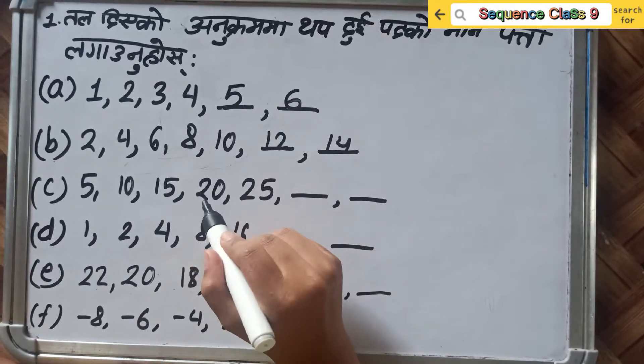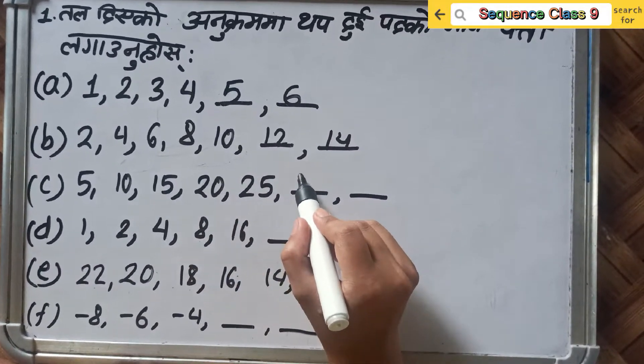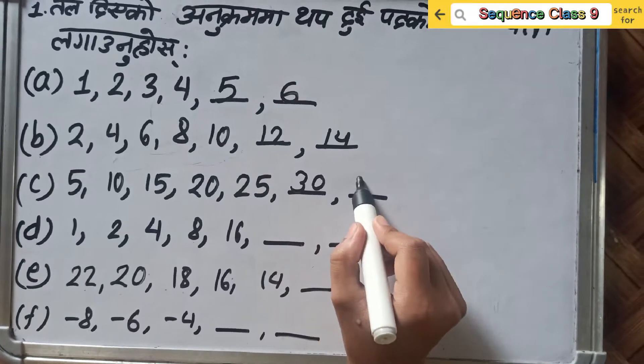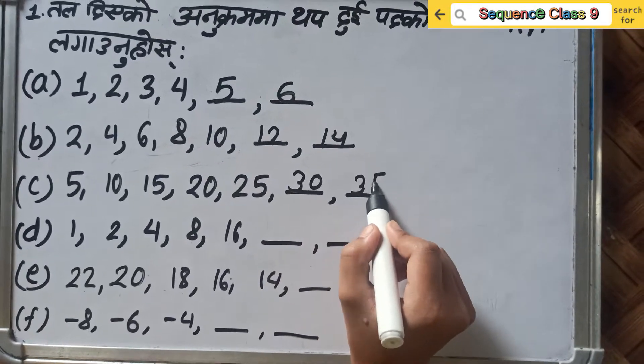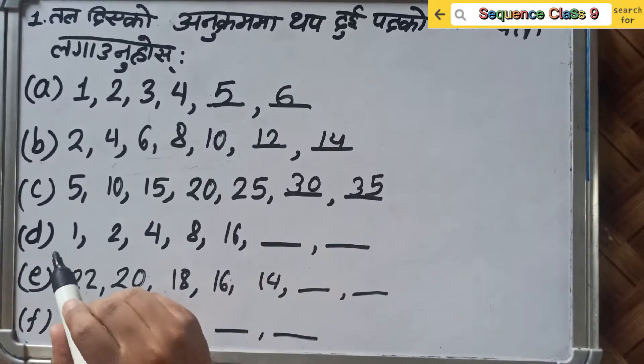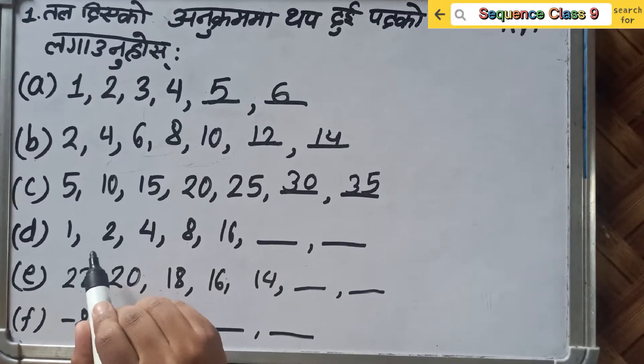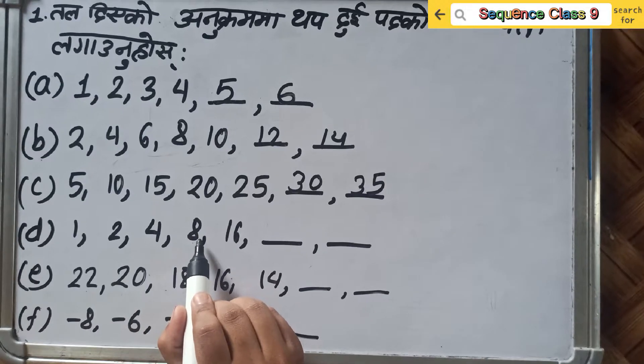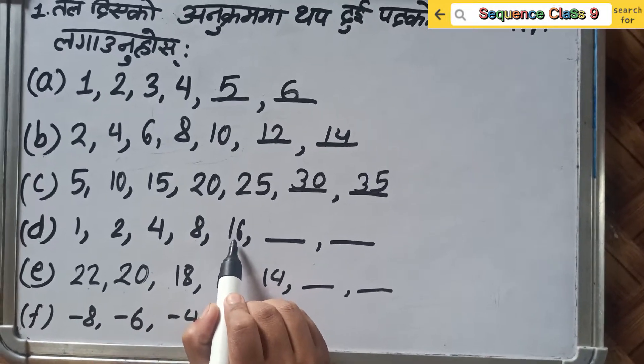Counting by 5s: 5, 10, 15, 20, 25, 30 and 35. Now powers of 2: 1, 2, 4, 8, 16.